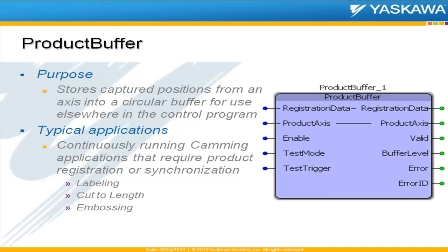The product buffer is actually one of the more popular blocks. I was talking to Kevin about this yesterday and we probably have close to 150 to 200 machines installed in the field using this particular block. What it does is store captured or latched positions from an axis and keeps them in a circular buffer for use elsewhere in the program. Very useful for continuously running applications that require registration or synchronization.